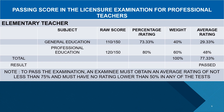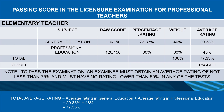To determine if you passed or failed the board examination, add the average ratings from both subjects: 29.33% in general education and 48% in professional education. You will obtain a total average rating of 77.33%. According to the Republic of the Philippines Professional Regulation Commission, an examinee must obtain an average rating of not less than 75% and must have no rating lower than 50% in any of the tests. Therefore, with a raw score of 110 in general education and 120 in professional education, and a total average rating of 77.33%, the examinee passes the licensure examination for professional teachers.